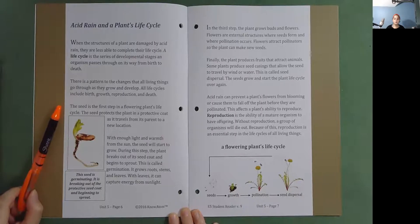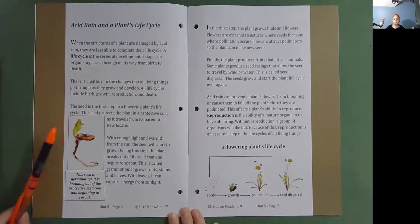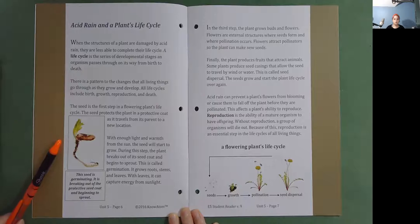The seed is the first step in a flowering plant's life cycle. The seed protects the plant in a protective coat as it travels from its parent to a new location. With enough light and warmth from the sun, the seed will start to grow. During this step, the plant breaks out of its seed coat and begins to sprout. This is called germination. It grows roots, stems, and leaves. With leaves, it can capture energy from sunlight. This seed is germinating, breaking out of the protective seed coat and beginning to sprout.